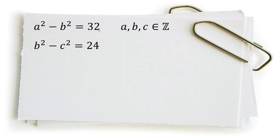a squared minus b squared equals 32, b squared minus c squared equals 24, where a, b, c are integers. If we want to find all possible values of a, b, c here, we can say without loss of generality that a, b, c are non-negative numbers, at least 0.